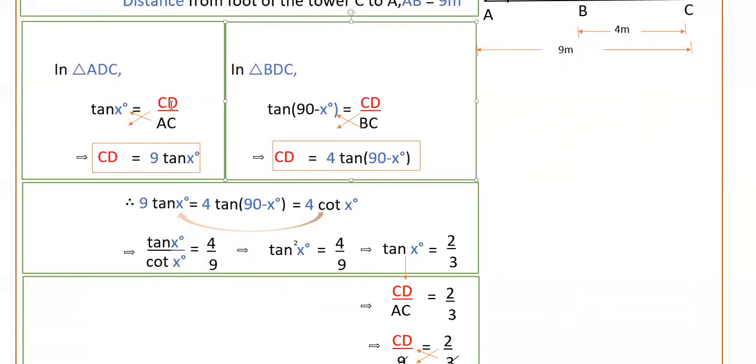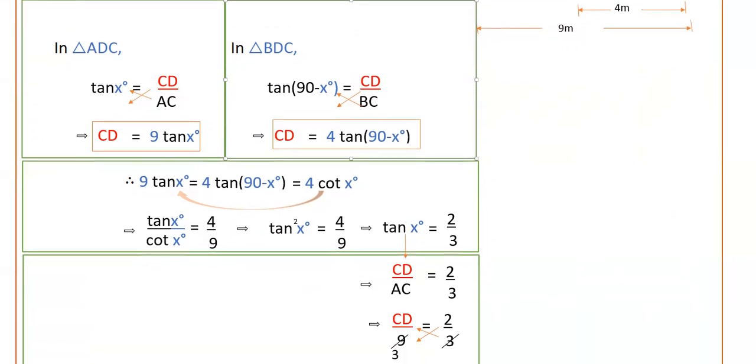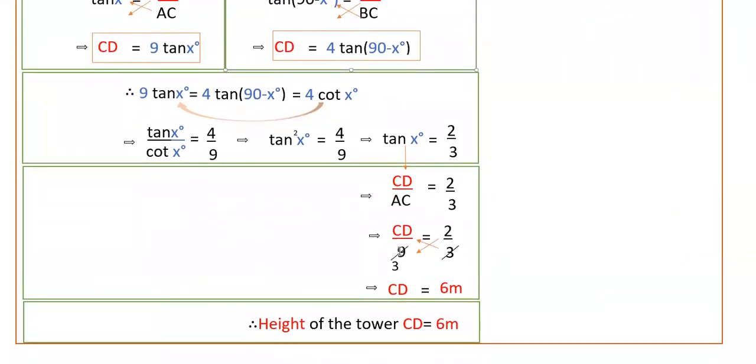And here tan x is CD by AC. So we have to prove that CD is equal to 6 meters. So take this tan x is CD by AC. So tan x is CD by AC, that is equal to 2 by 3. So CD by here AC value is 9 meters, that is equal to 2 by 3.